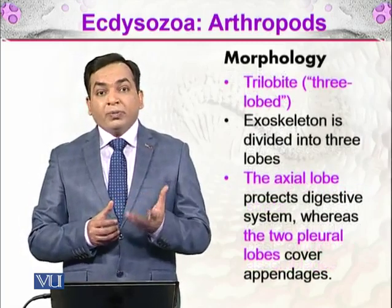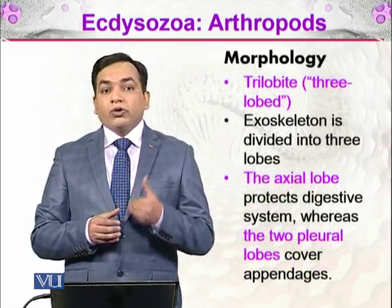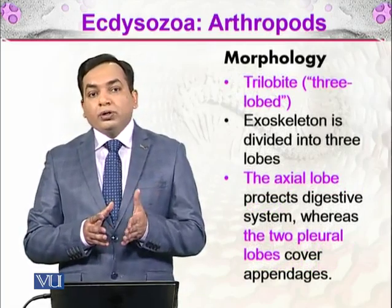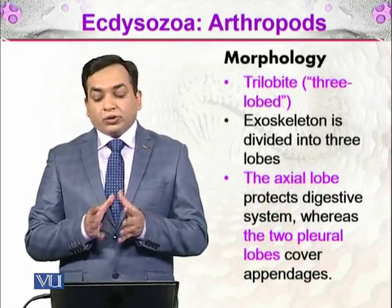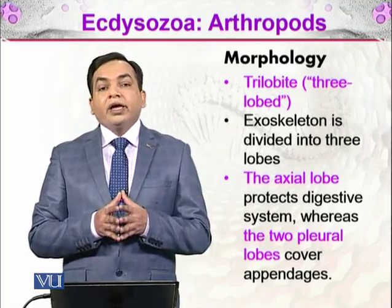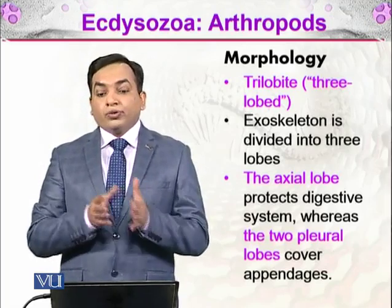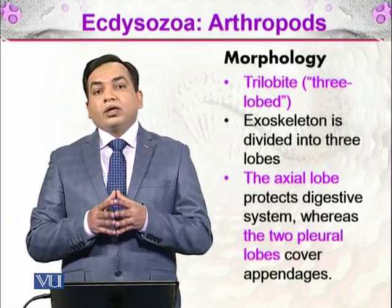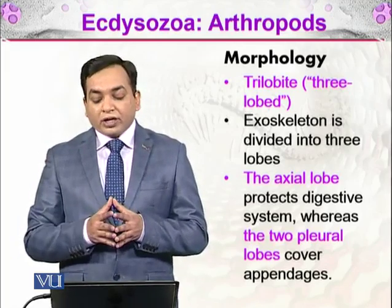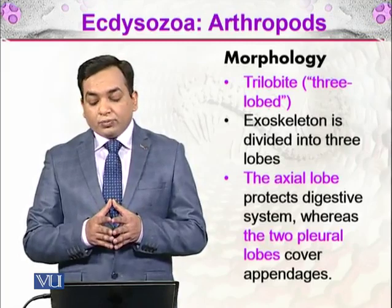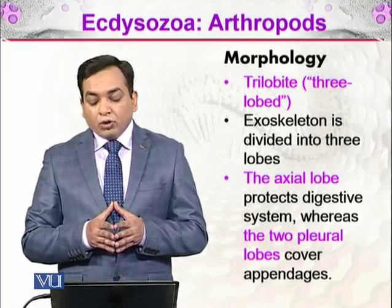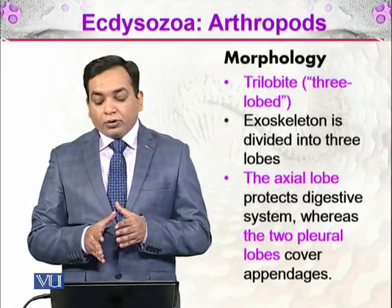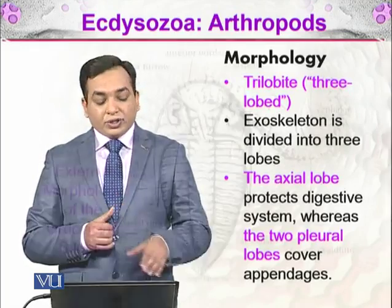What does the word 'trilobite' mean? 'Tri' means three and 'lobe' refers to three lobes. A trilobite is an organism with three lobes because its exoskeleton is divided into three lobes. The first is the axial lobe, which protects the digestive system, while the two pleural lobes cover the appendages.